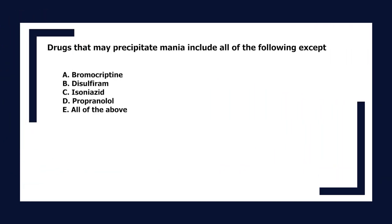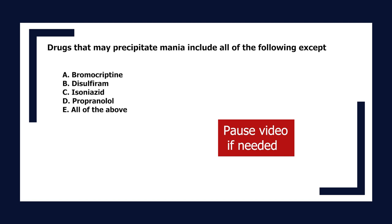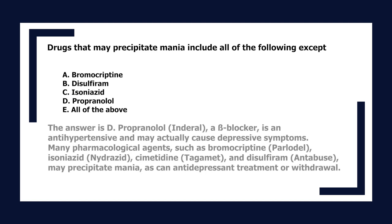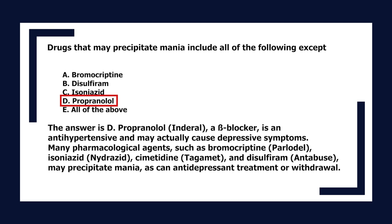Drugs that may precipitate mania include all of the following except: A. Bromocriptine, B. Disulfiram, C. Isoniazid, D. Propranolol, E. All of the above. The answer is D. Propranolol, a beta-blocker, is an antihypertensive and may actually cause depressive symptoms. Many pharmacological agents such as bromocriptine, isoniazid, cimetidine, and disulfiram may precipitate mania, as can antidepressant treatment or withdrawal.